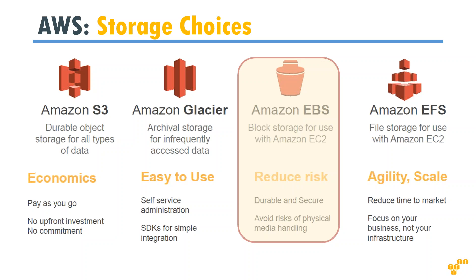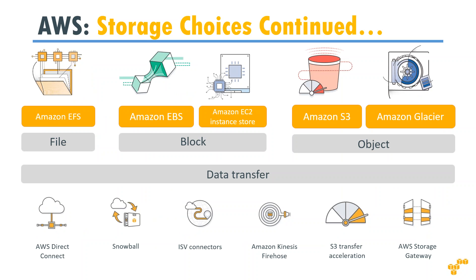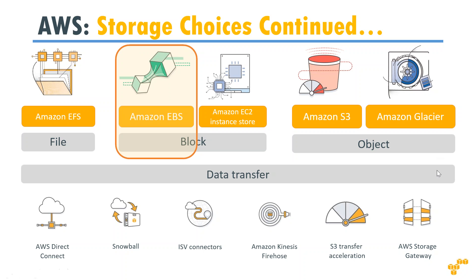Think of it as direct attached storage or a SAN storage if you are familiar with SAN concepts, but it does a lot more than that. We will see all the benefits and where it gets better than a typical SAN storage. Later in the classes we will also see how an Amazon instance store, which is also a block storage, is different from EBS.